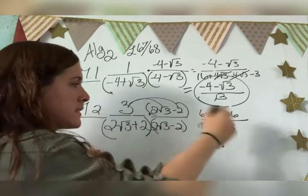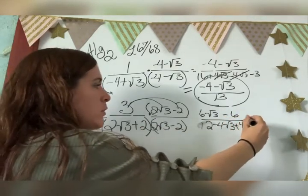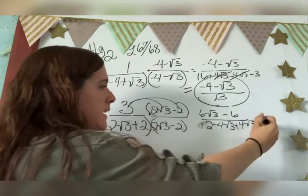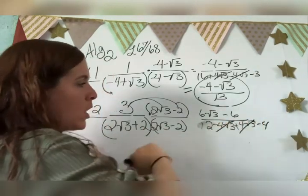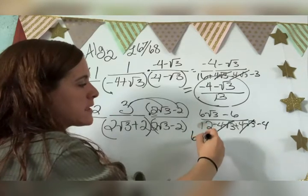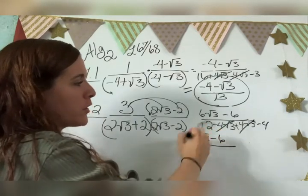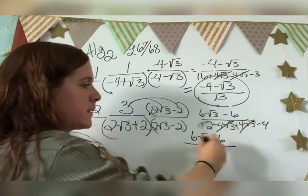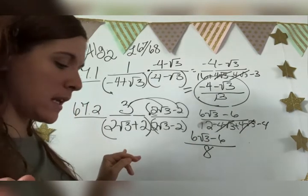This times this is 4 square root 3, and then this times this is negative 4. Okay, so we have 6 square root 3 minus 6 over 12 minus 4 is 8. Then we can actually, man, why do I keep doing that?